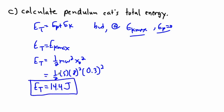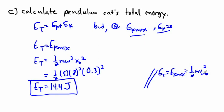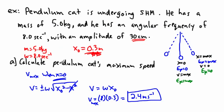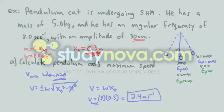We could also get this another way: E_total = E_k_max = ½mv_max². Since v_max = 2.4 m/s: ½ × 5 × 2.4² also gives 14.4 joules. That shows two different ways to arrive at the same answer. Either way, we can use these derived equations to solve real-life pendulum problems — not with a pendulum cat, of course, but with a real pendulum going back and forth.